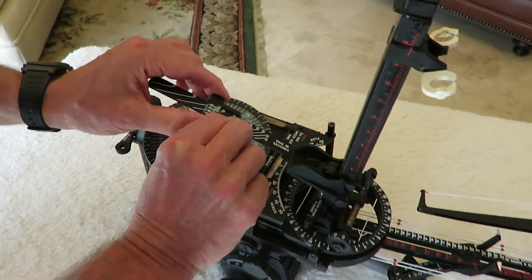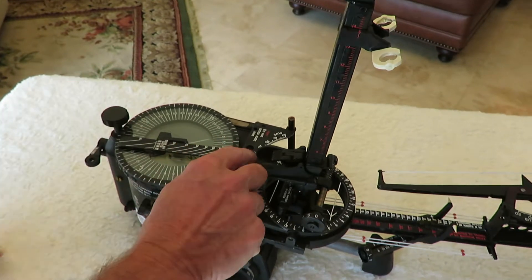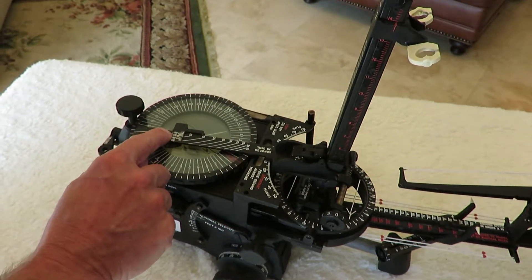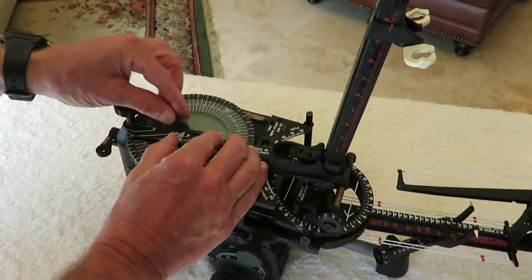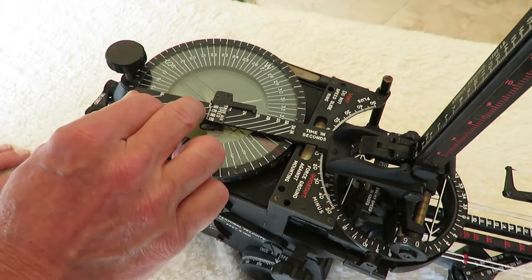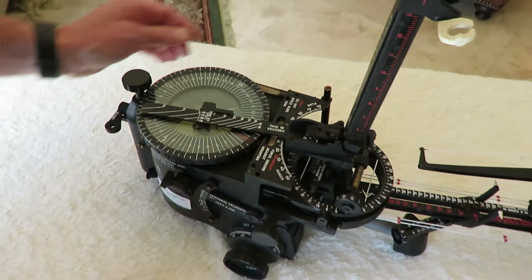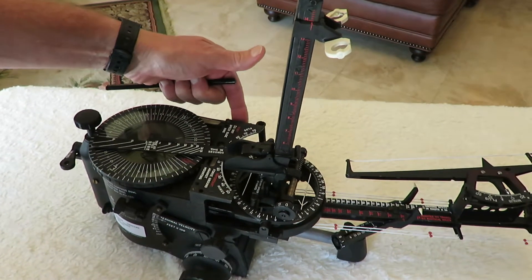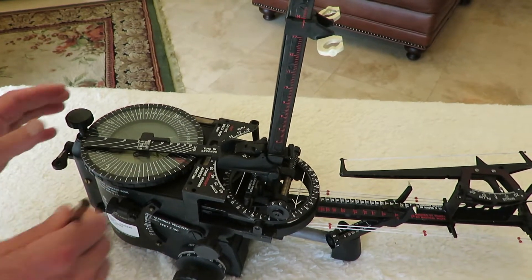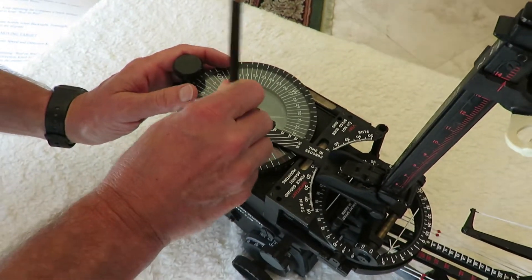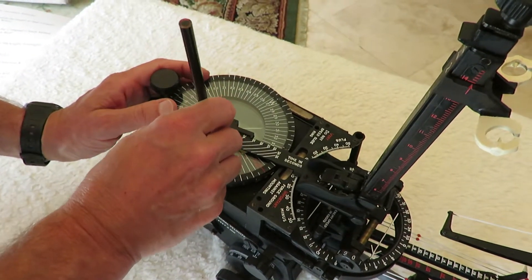We're then going to use this wind gauge cursor, and we're going to adjust this so the airspeed of 180 knots intersects with the time in seconds that we obtained from our stopwatch, which is 20 seconds. We're then going to use a Chinagraph pencil, which comes out of its special holder here next to its pencil sharpener, and we're going to draw a mark on the glass through the hole in the wind speed cursor.